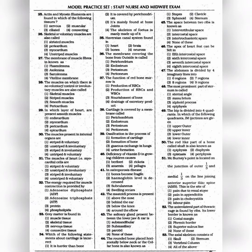Question 38: Cartilage is covered by a membrane called as — the answer is option 1: Perichondrium. Question 39: Ossification is a process of — the answer is option 2: Formation of bone. Question 40: Deficiency of vitamin D in growing children causes — the answer is option 2: Rickets. Question 41: The osteoporosis disease — the answer is option 1: Bones become fragile.